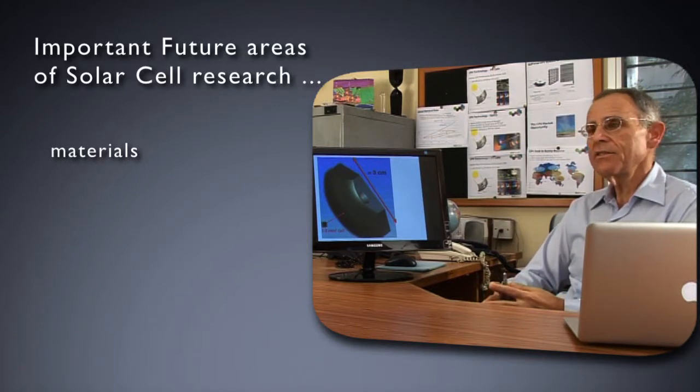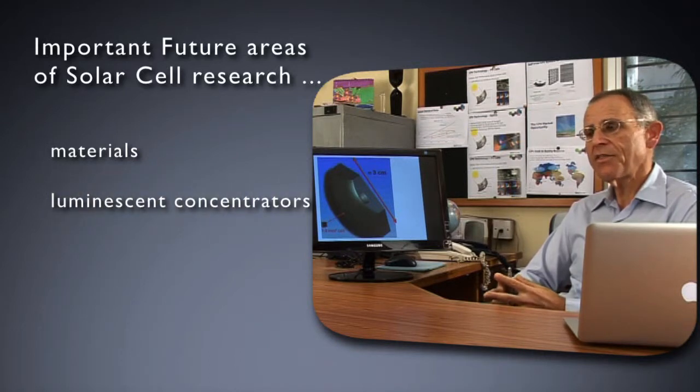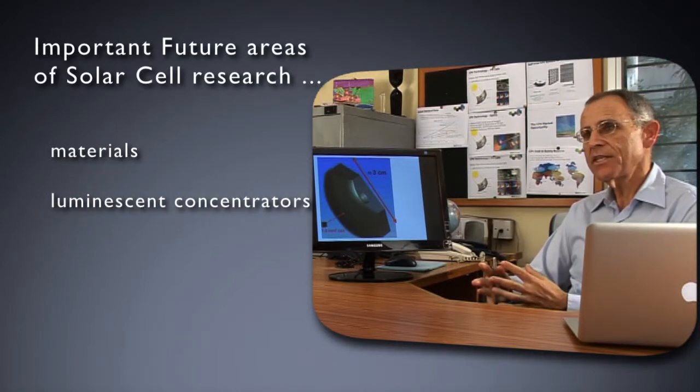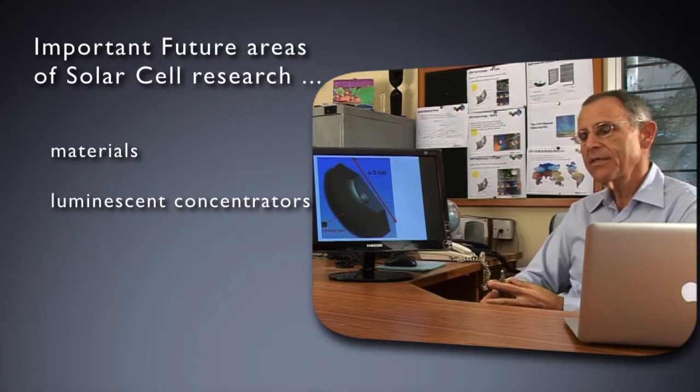The second is luminescent concentrators, meaning optical devices that can take solar light and change the spectrum and concentrate it in a rather novel way that I'll illustrate in a moment. Third is the antenna method.